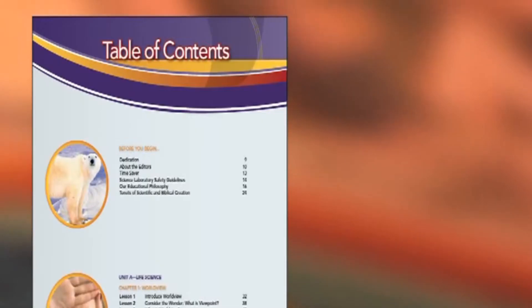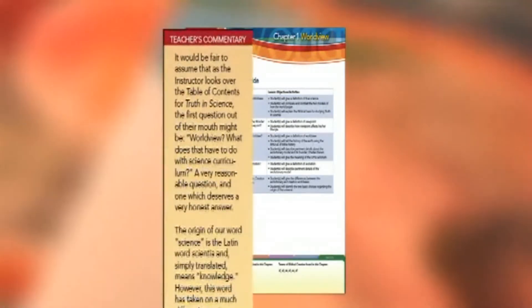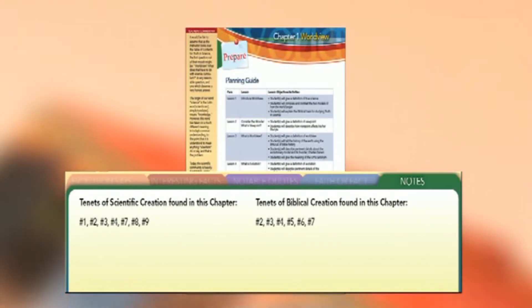Now we are ready to move into the lesson material. One of the first things you probably noticed is that the first chapter is not what most would consider a science subject — worldview. In every grade level of Truth in Science, the first chapter will introduce the concept of worldview. As you turn to the first page of the first chapter, you see it laid out in three sections: the sidebar called Teacher's Commentary, the section at the bottom called the Tab section, and the large rectangular section in the middle which is the lesson content material. At the beginning of each chapter, you will encounter the planning guide, which shows lesson titles and their sequence, as well as the objectives and activities for each. The Tab section on this first page reflects the individual tenets from the biblical and scientific tenets of creation which will be covered in that particular chapter.